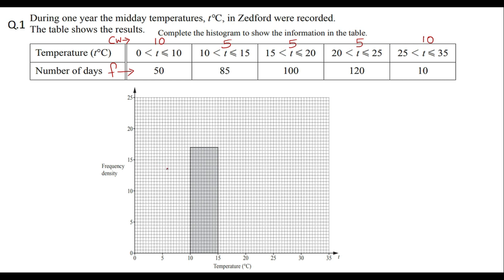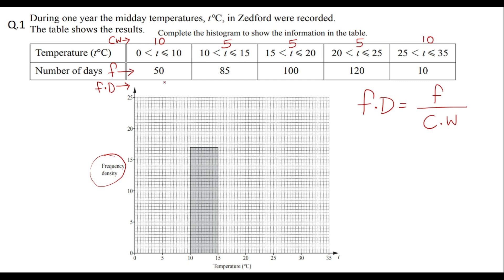Now using the formula — frequency density equals frequency divided by class width — I'll calculate for each interval. 50 divided by 10 gives 5. 85 divided by 5 gives 17. 100 divided by 5 gives 20. 120 divided by 5 gives 24. And 10 divided by 10 gives 1. So for each class interval the frequency density is now known.